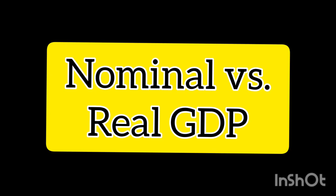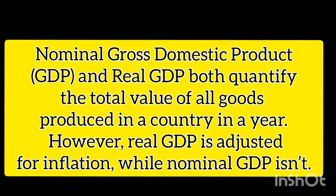What is the difference between nominal and real GDP? To understand this, we need to know the meaning of current prices. Current prices refers to the prices which are prevailing in the year in which goods and services are produced. For example, if we are talking about the value of goods of this year, the current prices will refer to the prices prevailing in 2021.